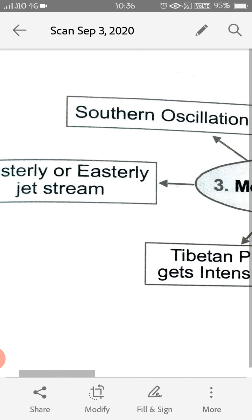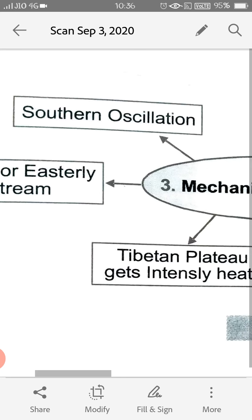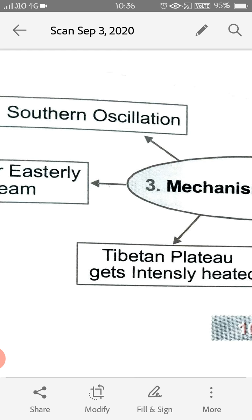Now the next one is your Southern Oscillation. This is now important, it is also known as SO, you can mention it in capital letters only, SO.